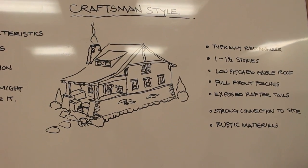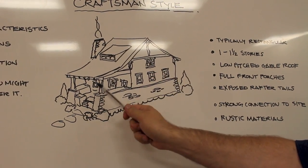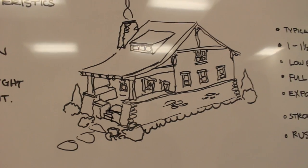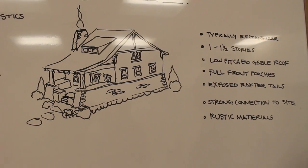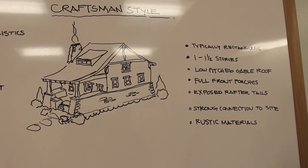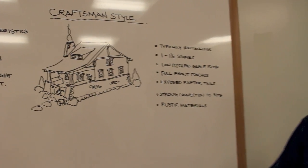There's generally exposed rafter tails, which rafters are the elements, the structural elements that hold up the roof, and a lot of times they'll just peek out there at the end. They generally have a very strong connection to the site, the landscape around them, and they're usually constructed of rustic materials, stone, wood, metal, that sort of thing.